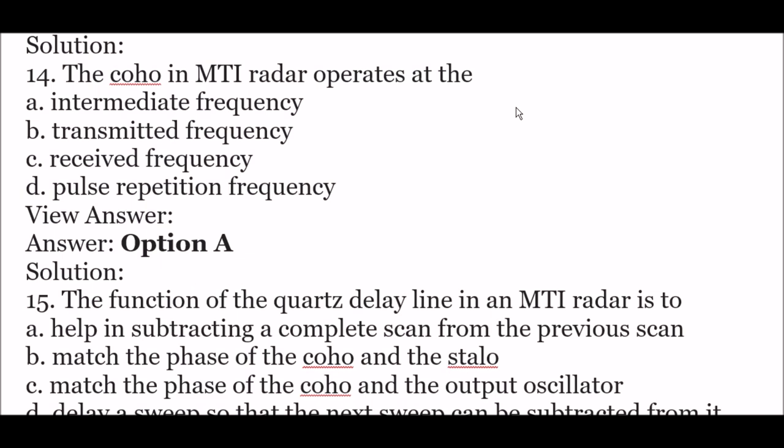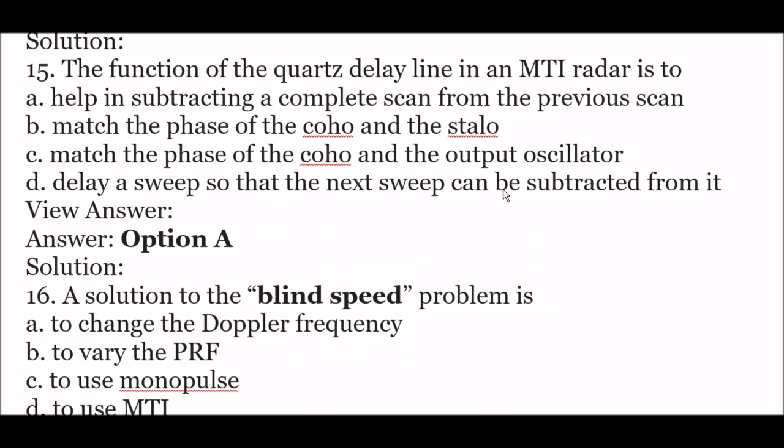Next question: the echo in MTI radar operates at the — option A: intermediate frequency, option B: transmitted frequency, option C: received frequency, option D: pulse repetition frequency. The right answer is option A — intermediate frequency. The echo in MTI radar operates at the intermediate frequency.